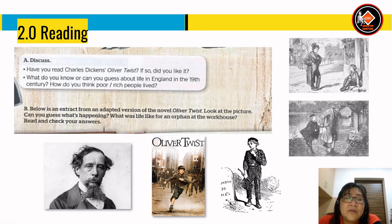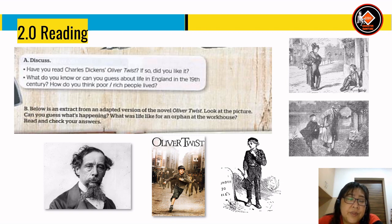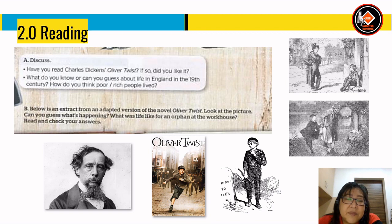Dear students, you are going to do another reading. This is a passage from the novel Oliver Twist. Have you read Charles Dickens' Oliver Twist? What do you know or can you guess about life in England in the 19th century? How do you think poor or rich people lived? You're going to read an extract from the adapted version of the novel. Look at the pictures - can you guess what's happening? What was life like for an orphan at the workhouse? Read and check your answers.